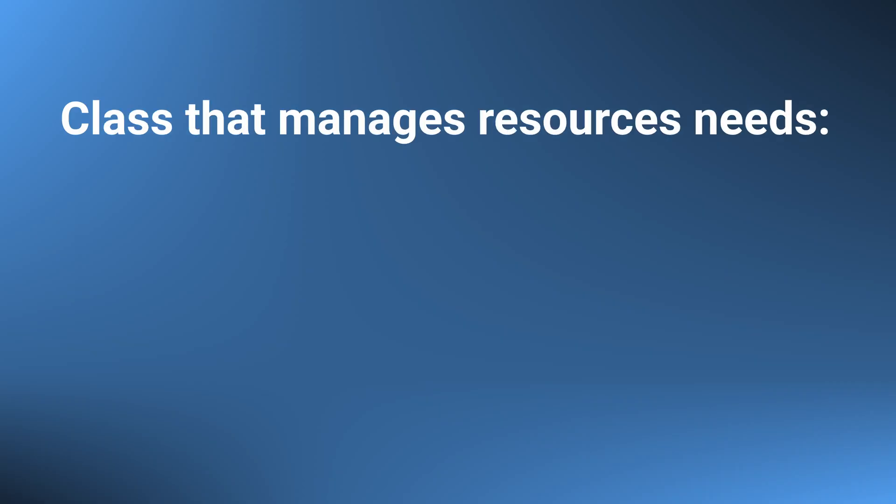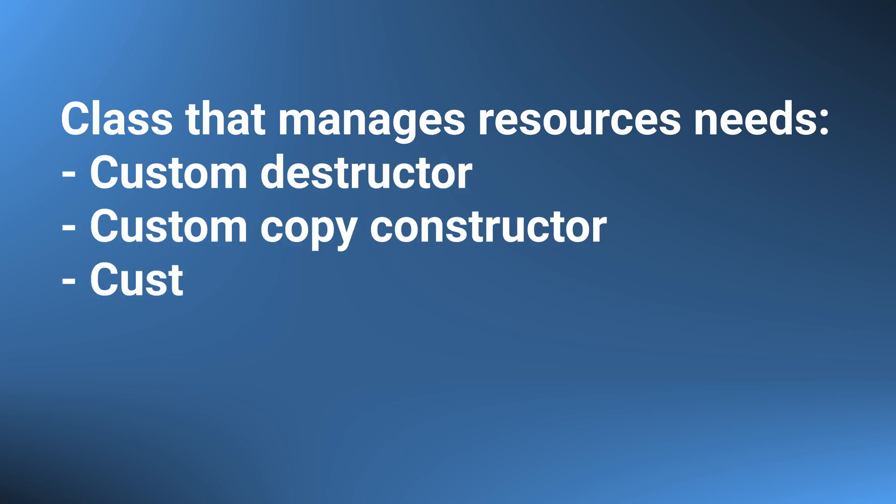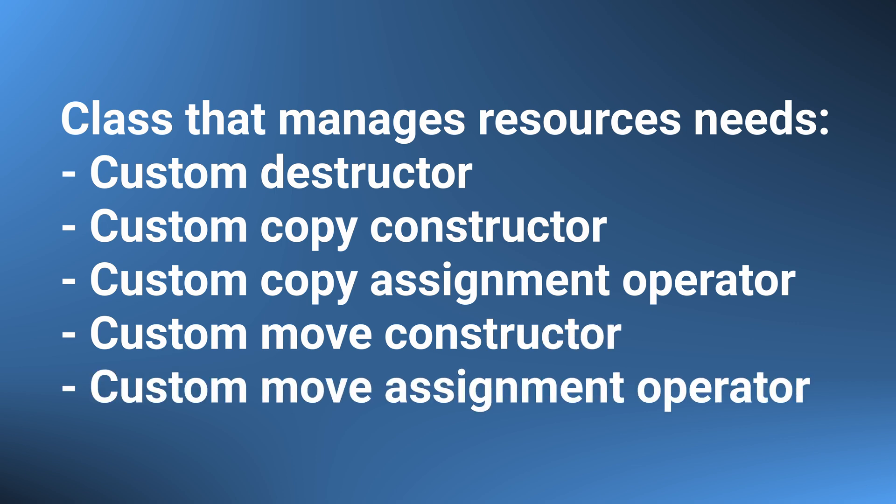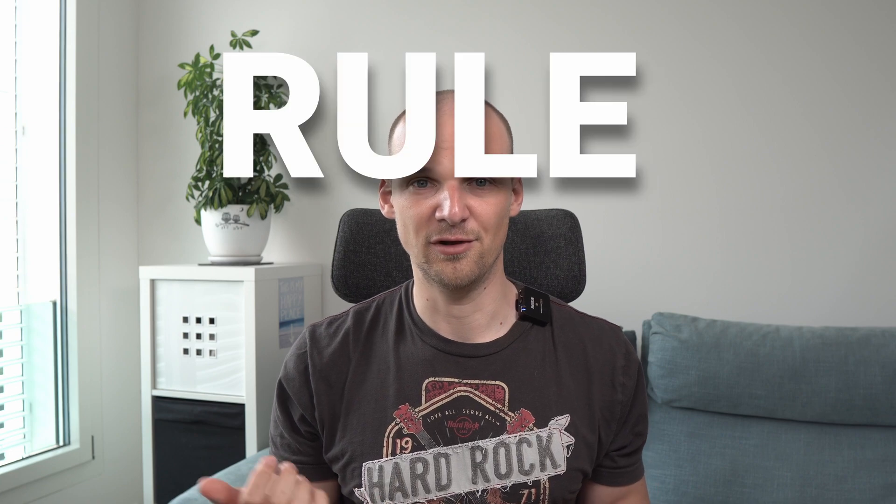It's time to summarize our findings. All of these custom functions rely on the fact that we have to manage some resource of an object manually. In summary, we can reformulate all previous rules as just a single one: if we manage some resource manually, we must implement a custom destructor, a custom copy constructor, a custom copy assignment operator, a custom move constructor, and a custom move assignment operator. This rule is known as the rule of five, as there are five special functions. It was known as the rule of three before move semantics was introduced. An alternative way to think about it: if you find you need to implement just one of these special functions, you most likely need to implement all the rest.